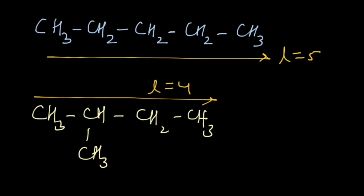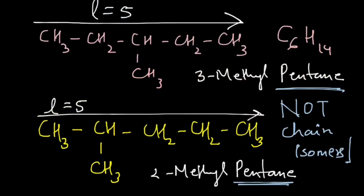In the next video, I'm going to talk about position isomers. If you look at the previous example of 3-methylpentane and 2-methylpentane, those two compounds were not chain isomers, but they are also not the same. So what kind of isomers are they? They are position isomers — we will take a look at this in the next video.